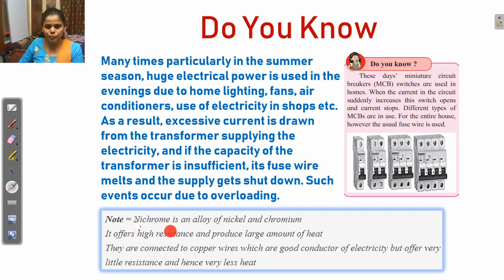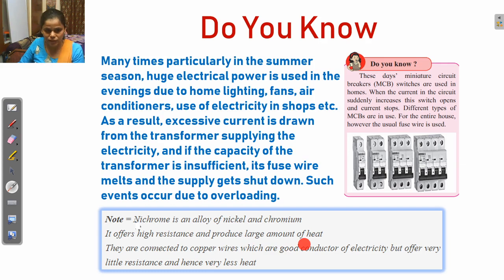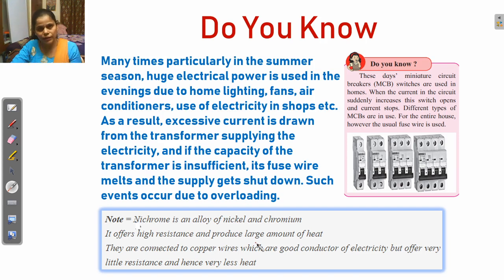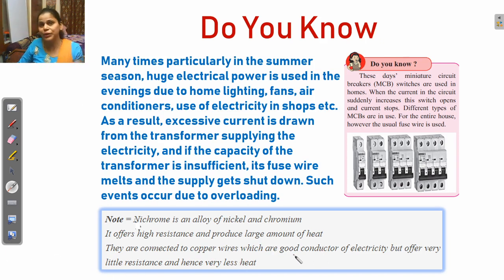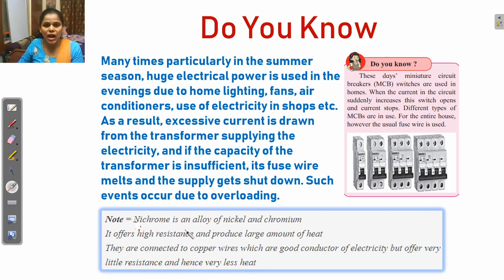One important note: nichrome, used in filaments, is an alloy of nickel and chromium. It offers high resistance and produces a large amount of heat, so nichrome wire is used in electrical appliances like electric irons. They are connected to copper wire, which is a good conductor of electricity but a poor conductor of heat. Nichrome has high resistance and produces significant heat.